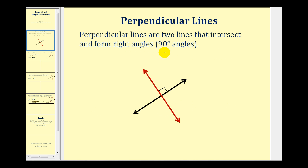Let's start by defining perpendicular lines. Perpendicular lines are two lines that intersect and form right angles, or angles that measure 90 degrees.